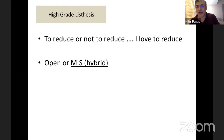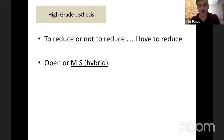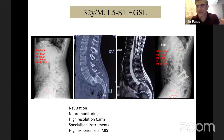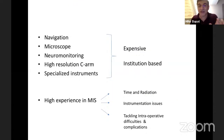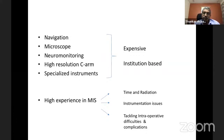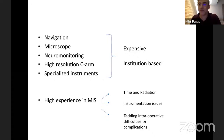Now let us move to the burning topic — high-grade listhesis, whether to reduce or not to reduce. I love to reduce; I am a surgeon, I restore anatomy, that is my ego. We have slowly moved towards an MIS hybrid kind of fixation. But hybrid or MIS means navigation, neuromonitoring, robotics, high-resolution C-arms, specialized instruments, and higher experience in MIS. This makes the surgery only in the hands of the few. Is that the goal — that you restrict the number of people doing these surgeries, or do you want a technique that can be used by all?